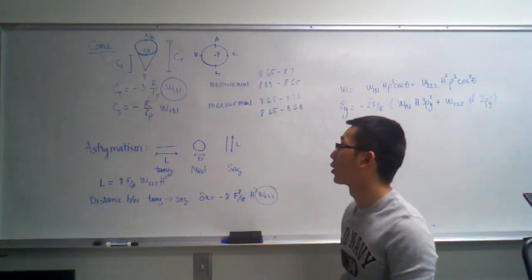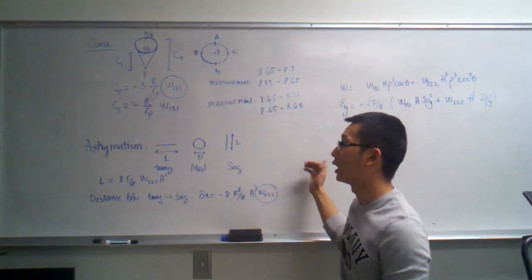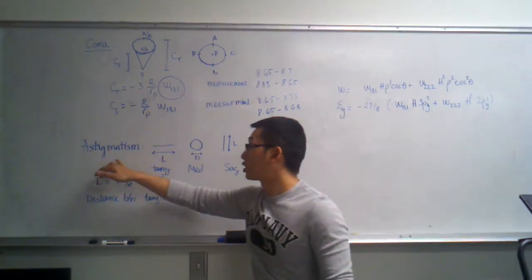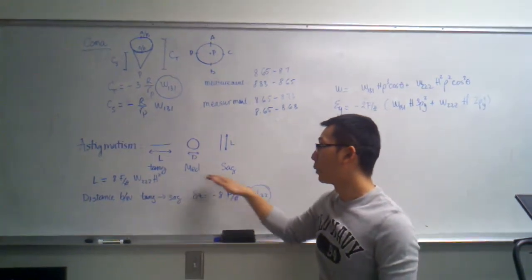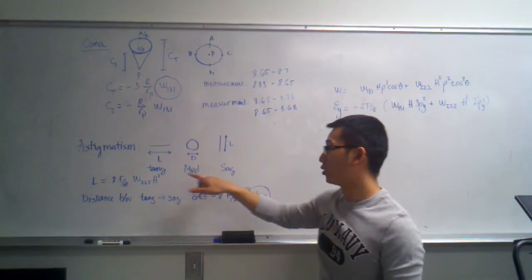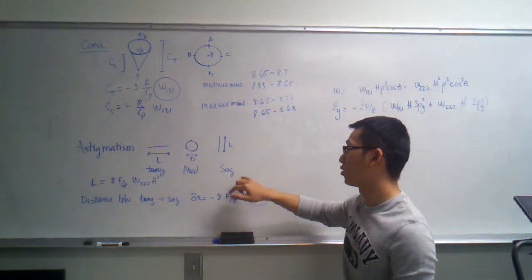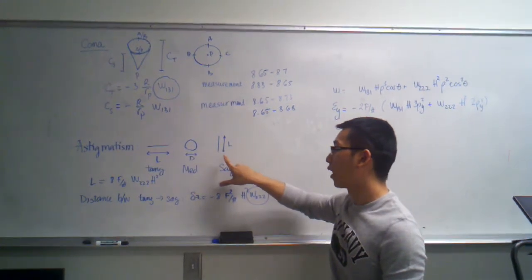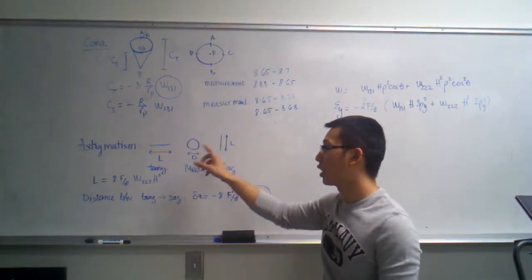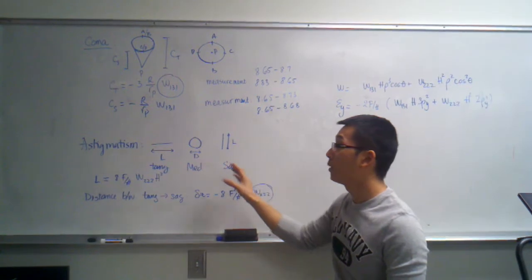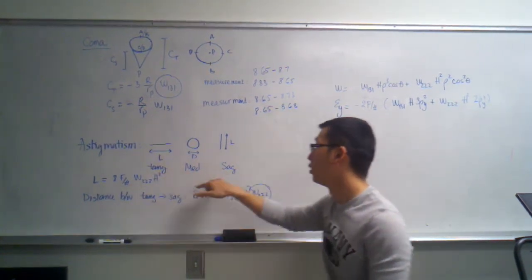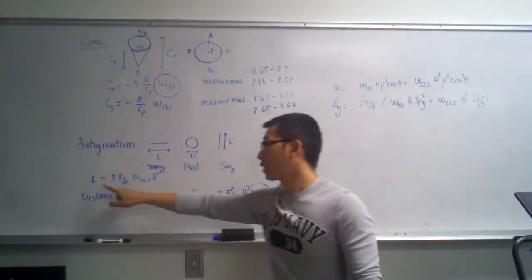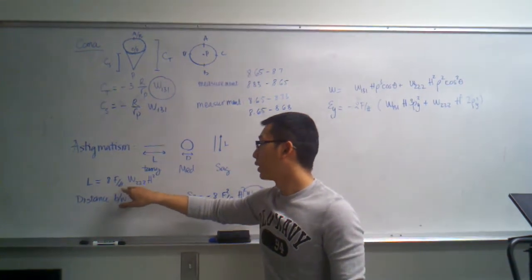For astigmatism as you see we have three different locations: tangential focus, middle focus and sagittal focus, which is a line, a circle and a line. So in the lab basically we want to measure the change of the microscope. The microscope is the distance between the tangential to sagittal focus. And that's L, we substitute it in here.